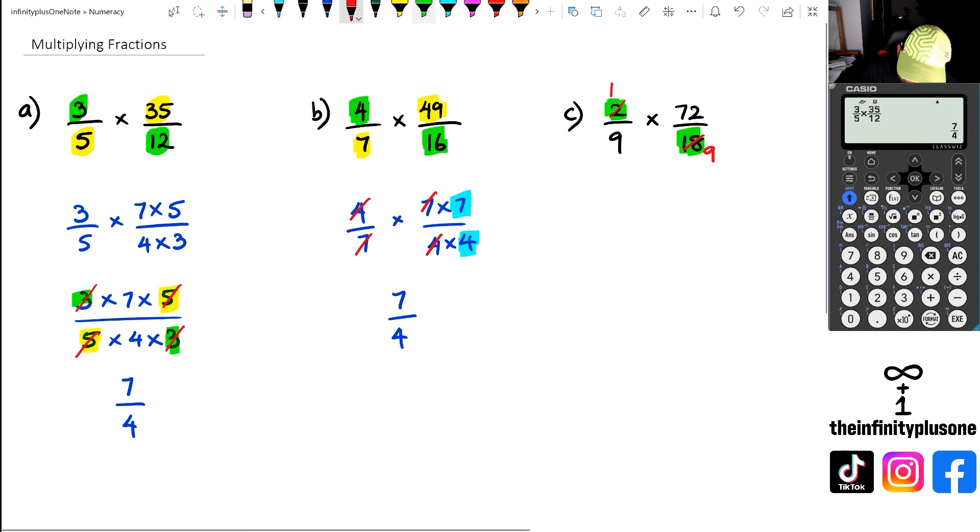Then they kind of do the same thing with 9 and 72. They go, well, 72 is 9 times 8. So I could go 9 divided by 9, that's going to give me a 1. 72 divided by 9 is going to give me 8. And now what you've got is you've got 1 times 8 in the numerator, 1 times 9 in the denominator, and you're going to get 8 over 9.